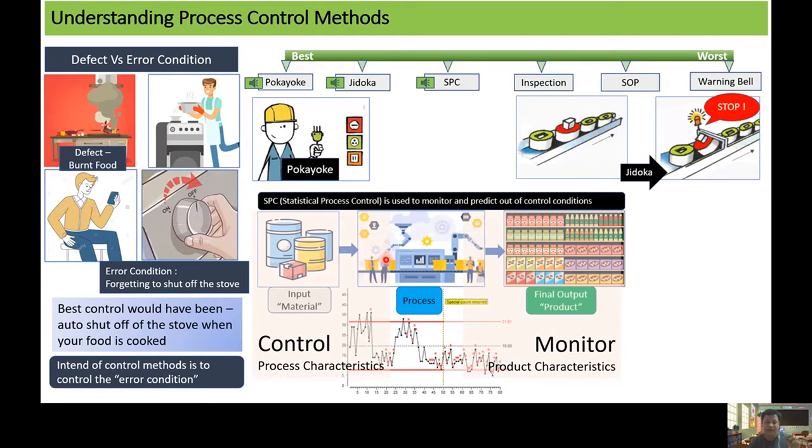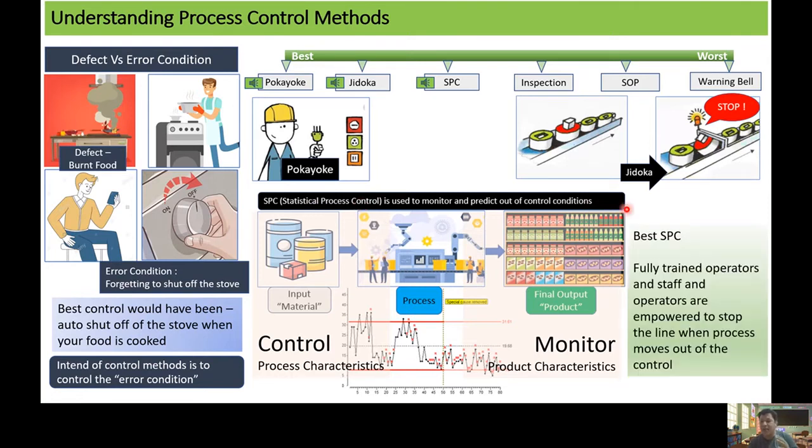We have to understand that SPC has different levels in implementation. The best SPC is the one where the operators and staff are fully trained and they are empowered to stop the line when the process moves out of control. The other level of SPC, which are not the best type of SPC, are used in a manufacturing process but there are no action or reaction on the control conditions which are moving out of the control limits. So we have to remember that implementation of SPC is directly linked with the empowerment and the knowledge of the operator and the staff.